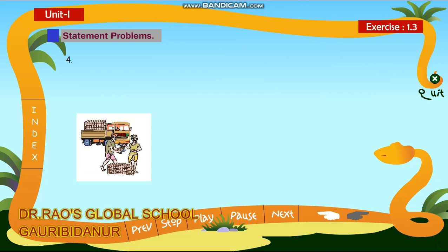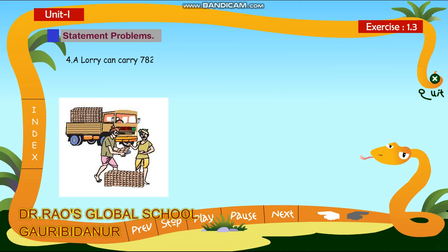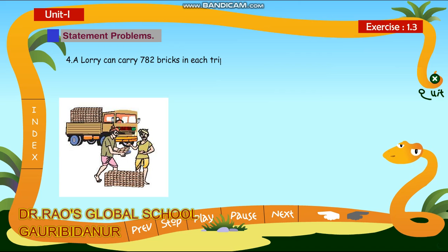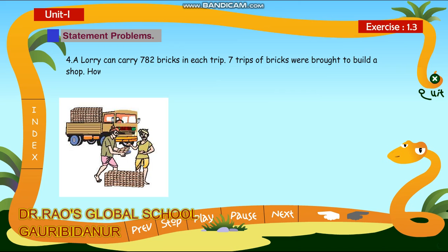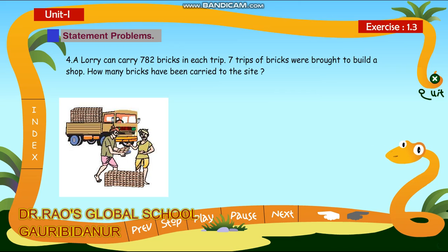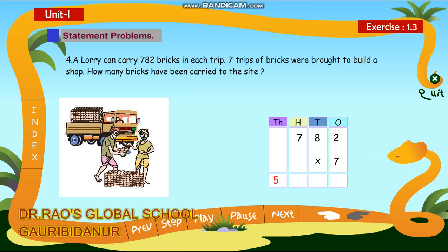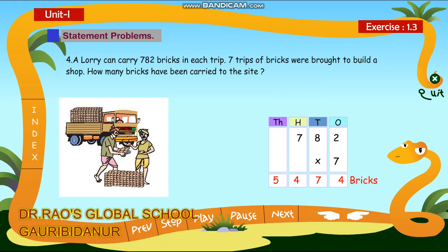4. A lorry can carry 782 bricks in each trip. 7 trips of bricks were brought to build a shop. How many bricks have been carried to the site? 5,474 bricks.